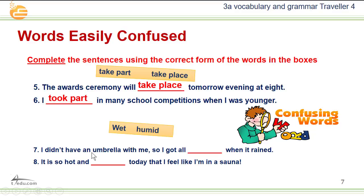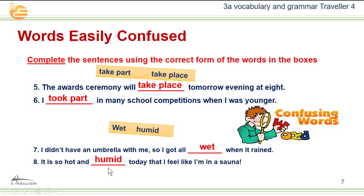With wet and humid: number seven — I didn't have an umbrella with me so I got all wet when it rained. Number eight — it is so hot and humid today that I feel like I'm in a sauna. Note: humid is usually used with the weather.